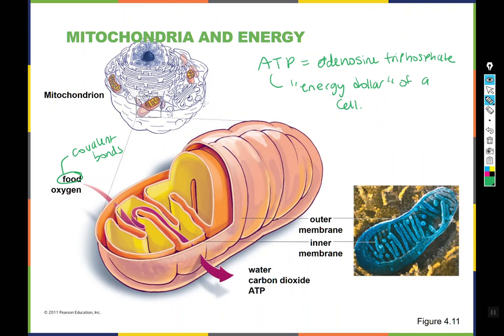We get energy out of covalent bonds by oxidizing the food molecules we eat. Oxygen and food go into a mitochondrion, and a bunch of stuff happens — let's just call it magic for now. Outcomes are water, carbon dioxide, and ATP. ATP is the goal, and water and carbon dioxide are byproducts. Mitochondria are actually the reason we breathe out carbon dioxide. When you exhale, your breath is a mixture of water and carbon dioxide — those two things are produced by cells as wastes, transferred into the blood, and then you breathe them out.